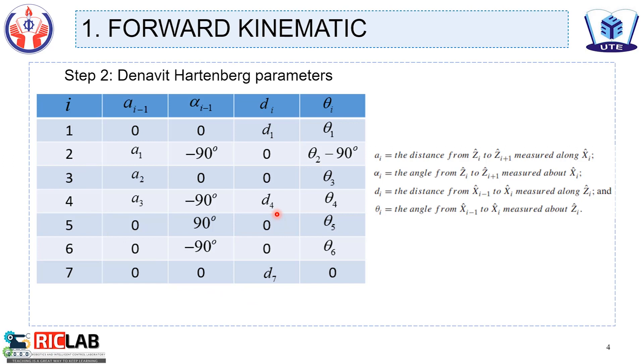After we have the DH table, we should substitute the values into the displacement matrix T, then we get a matrix representing the forward kinematic of robot.